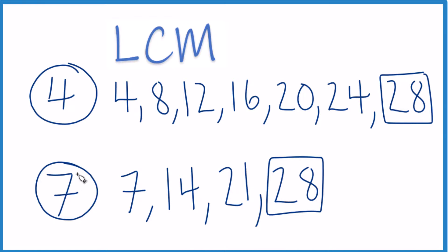And that's it. The least common multiple for 4 and 7, that's going to be 28. There are other ways you can find this, but you'll get the same answer.